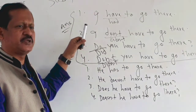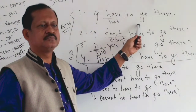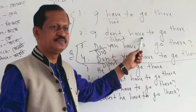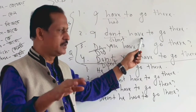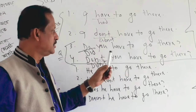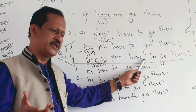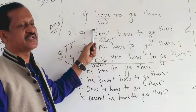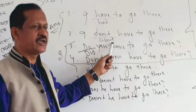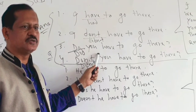Affirmative past: 'I had to go there.' Negative past: 'I didn't have to go there.' Interrogative past: 'Did you have to go there?' Negative interrogative past: 'Didn't you have to go there?' Very good. I asked my students: 'Did you have to go there?' — Yes.